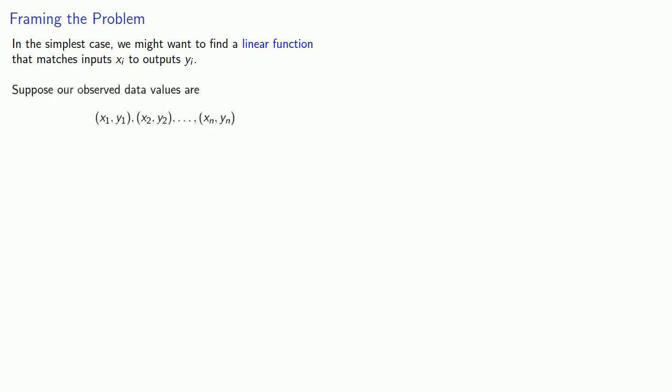So let's try to set up this problem. In the simplest case, we might want to find a linear function that matches inputs xi to outputs yi. Suppose our observed data values are a set of ordered pairs, and we want to predict the y's from the x's using a linear function. The function will have the form y equals a1x plus a2, where a1 and a2 are unknown parameters.